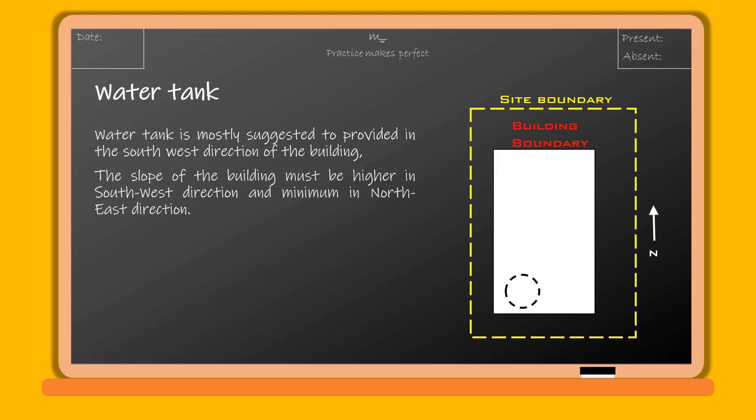The water tank is mostly suggested to be provided in the southwest direction of the building. The slope of the building must be higher in the southwest direction and minimum in the northeast direction.